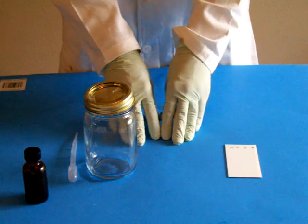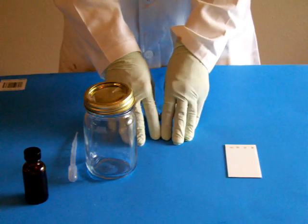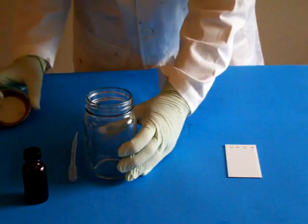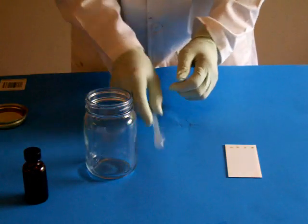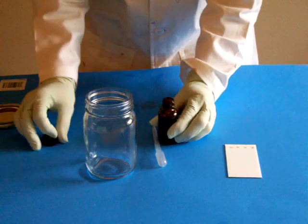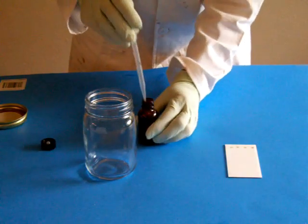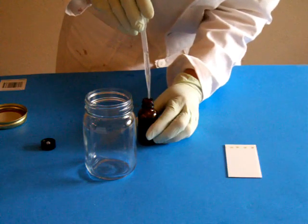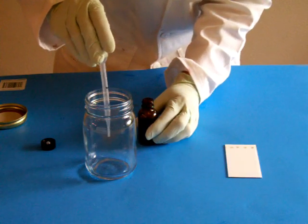You must have a level surface to start the developing of the TLC plate. Take your glass mason jar, which is our developing chamber, the 3µL pipette, and our developing fluid from the brown jar. You're going to draw up two milliliters of developing fluid into the pipette, and just simply put it into the jar.